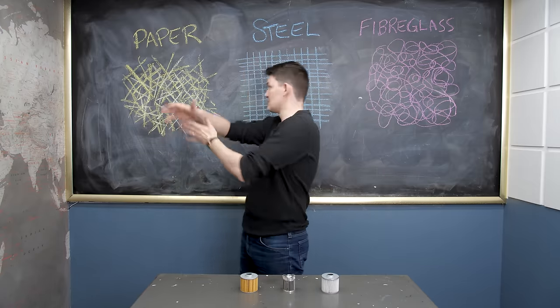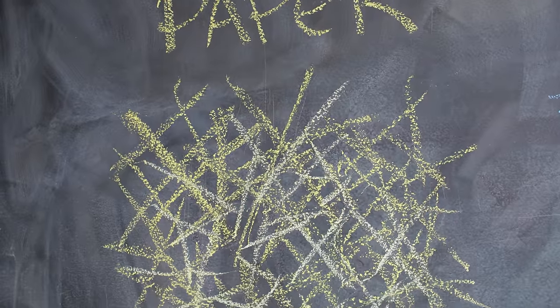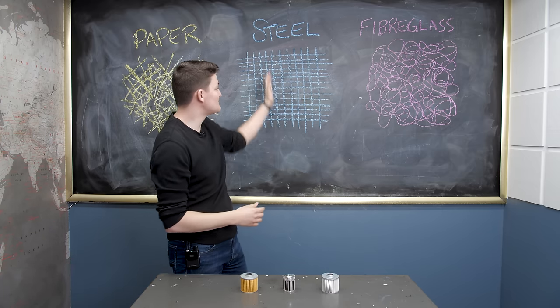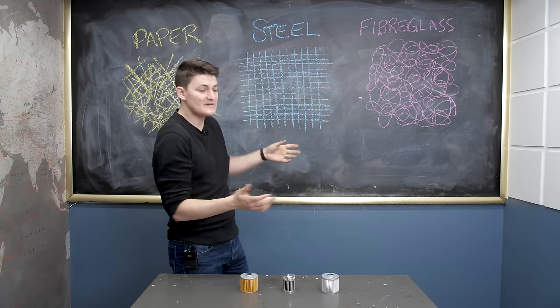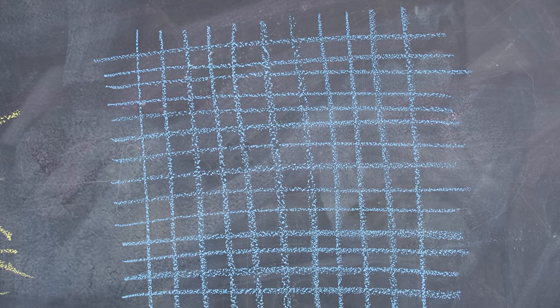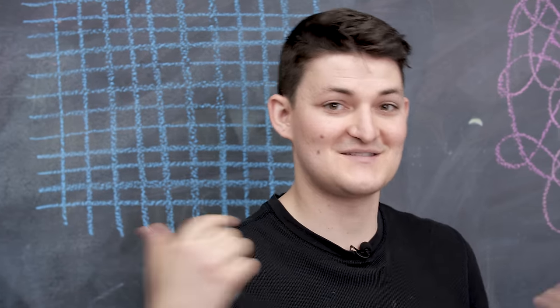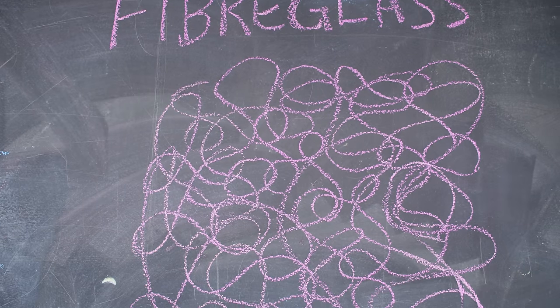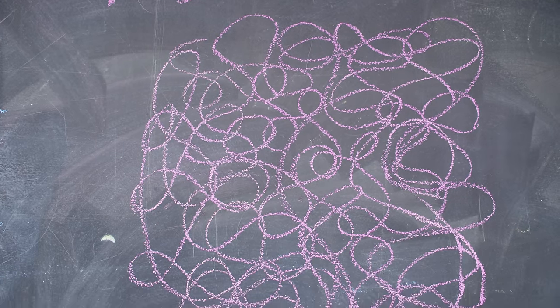And the pitch is that paper is a mess of fibers, so it traps everything, including oil flow. And steel is a precise mesh of 30 microns usually, so it traps nothing smaller, but at least oil flows easily. Fiberglass is supposed to be the best of both—it traps particulate of all sizes because it's puby, but more properly, tuby.